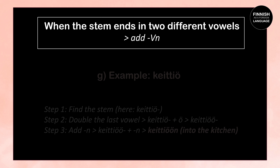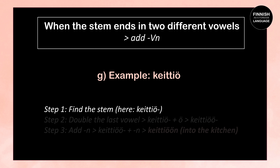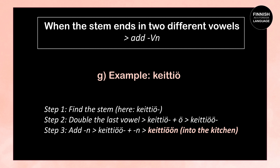When the stem of a word ends in two different vowels, we also add the vowel+N ending. For example: keittiö, which means kitchen. The stem is keittiö. We double the last vowel: keittiö + ö = keittiöö. Then we add N: keittiöö + N = keittiöön, which means into the kitchen.